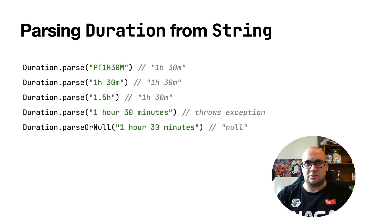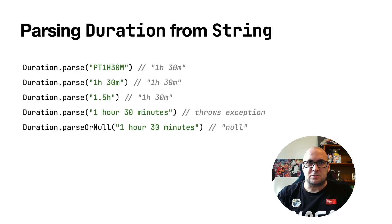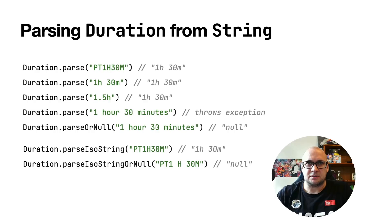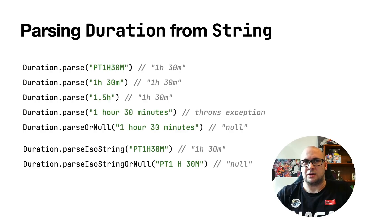We also added new functions for parsing duration from a string representation. You can see examples of parse and parseOrNull usages. The parse function is a universal one — it accepts the duration in any format. If the duration is formatted incorrectly, the parse function fails and throws an exception. Alternatively, you can use parseOrNull, which returns null in case of incorrectly formatted input. Besides parse and parseOrNull, we also added functions for working with ISO-formatted durations, where the functions assume that the input is correctly formatted according to the ISO specification.